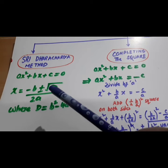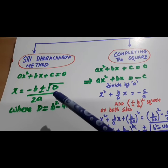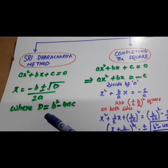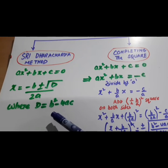Quadratic equation. X is equal to minus B plus minus root D over 2A. Where D is equal to B square minus 4AC. This is called discriminant.